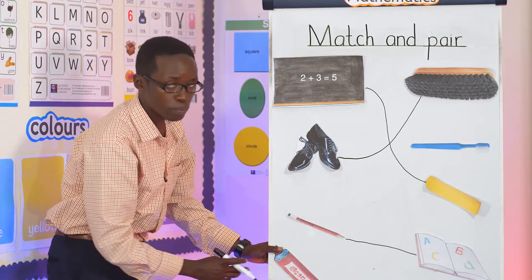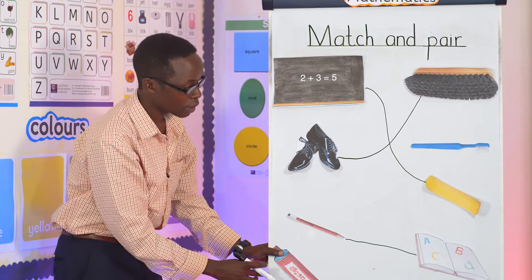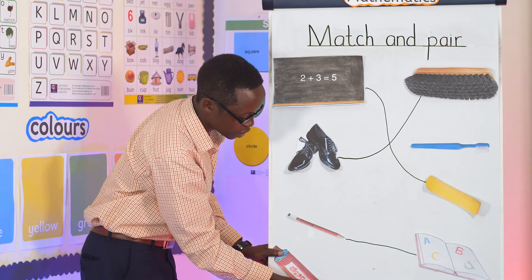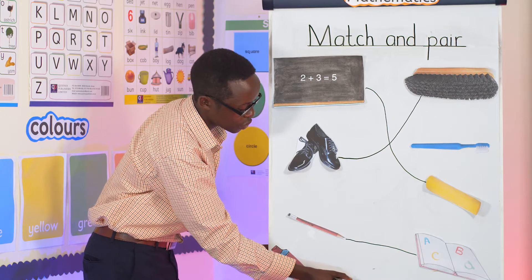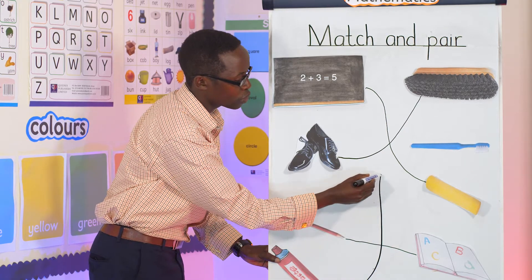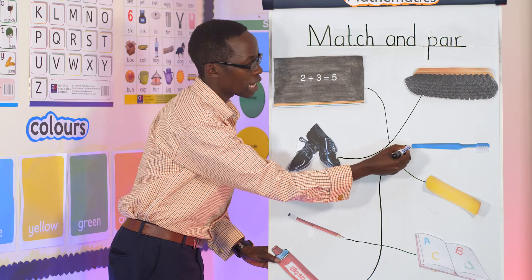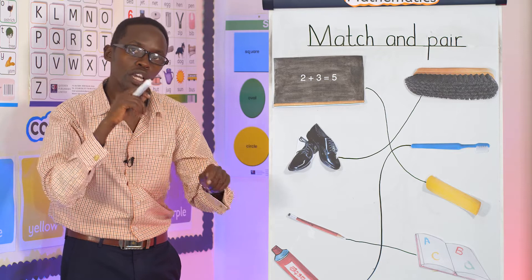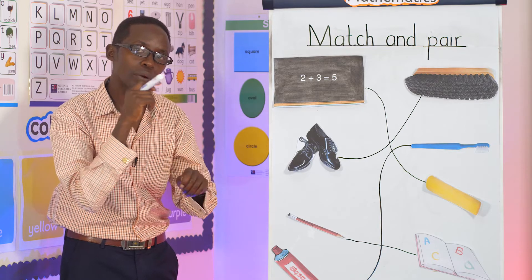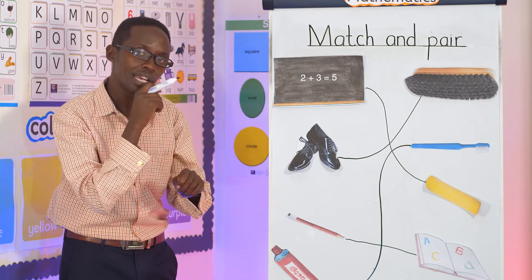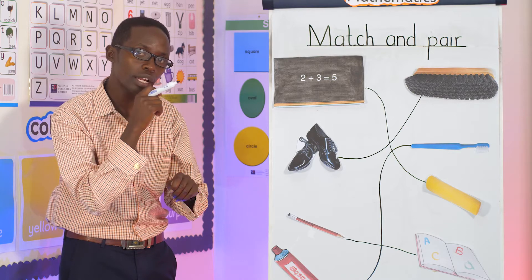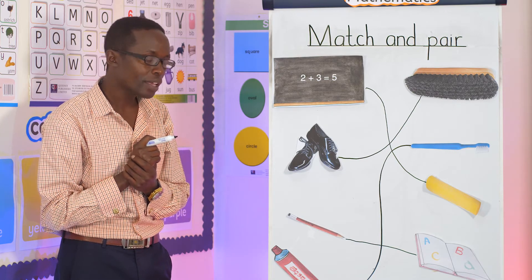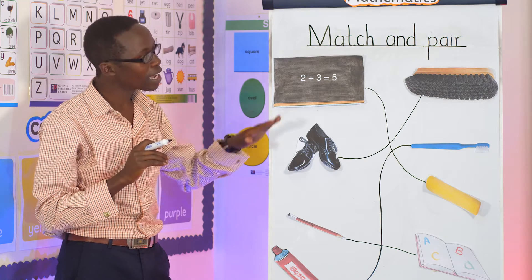Yes — we match the pencil with a book, because we usually use a pencil to write in a book. Now for the toothbrush — toothpaste is the one that goes with it. We take the toothpaste and match it with the toothbrush, because we use toothpaste together with a toothbrush when we are brushing our teeth in the morning, evening, or afternoon. That's wonderful!